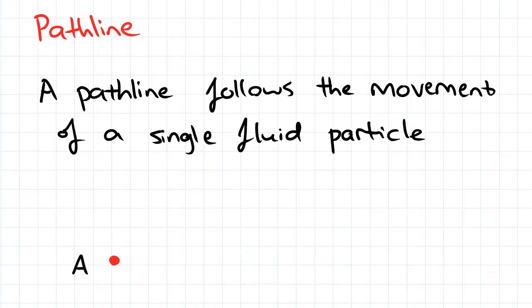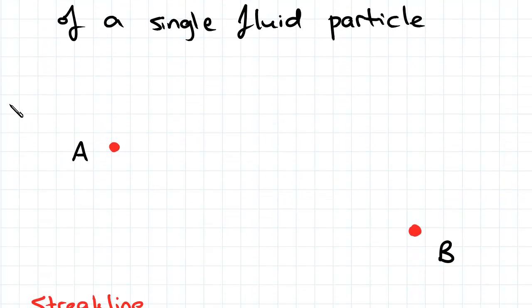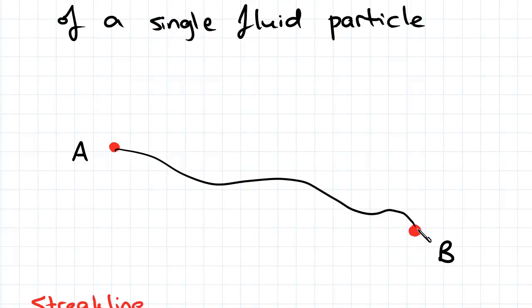First, pathline — that's defined as the path a fluid particle follows. So if we look at a point A and B, it's simply the path that the fluid particle takes between them.